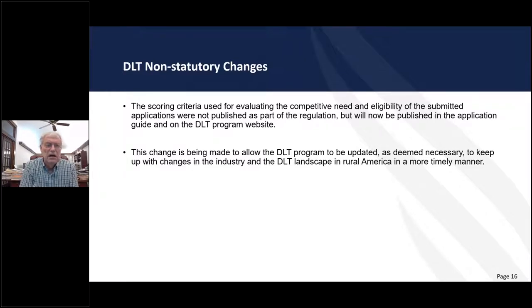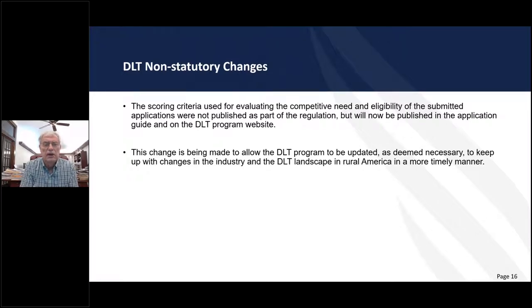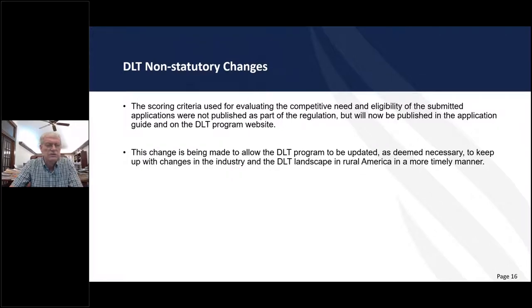There's a change in the economic need calculation — I've got a sample upcoming. There's also a change where an applicant can make multiple applications but would receive only one award based on their highest-scoring application. If somebody provides three applications, we'd score all three but they could only get one award. Awards are based on scoring criteria — not any other factors — and we start from the highest score and work our way down the list until we run out of money.